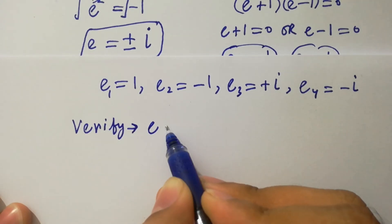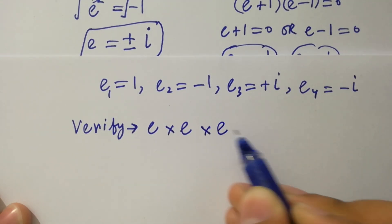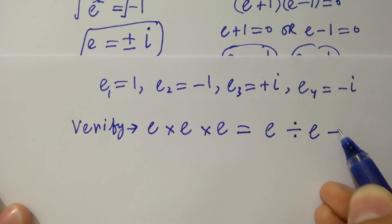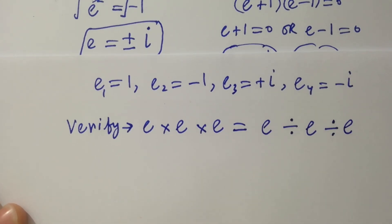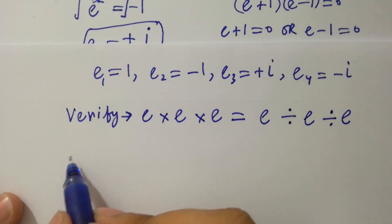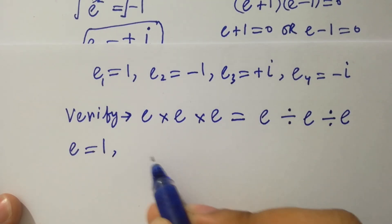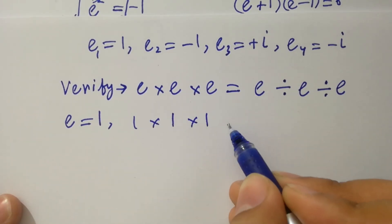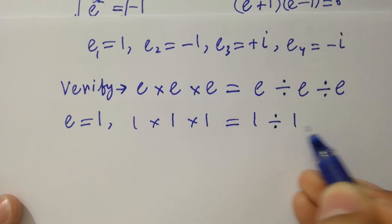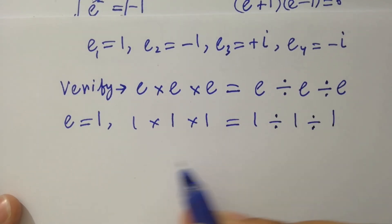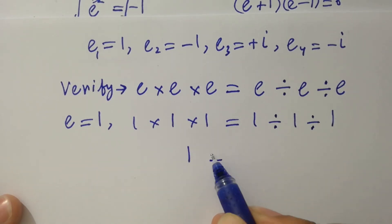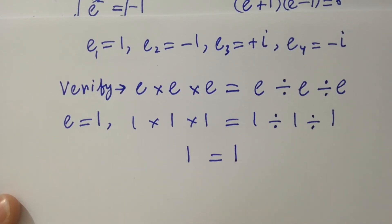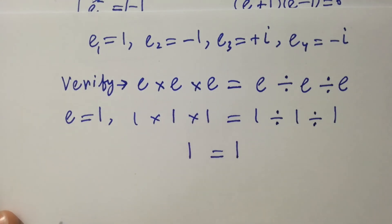We verify: e times e times e equals e divided by e divided by e. First, take e equals 1. Then it will be 1 times 1 times 1 equals 1 divided by 1 divided by 1. The left hand side gives 1, and 1 divided by 1 divided by 1 on the right hand side also gives 1. So left hand side equals right hand side.